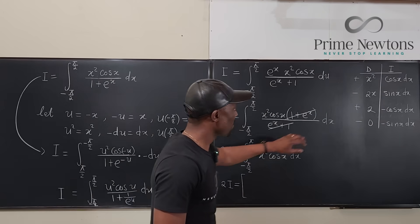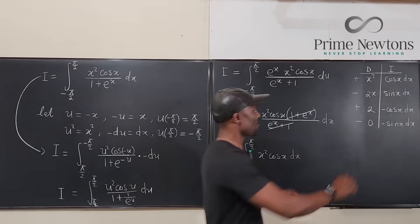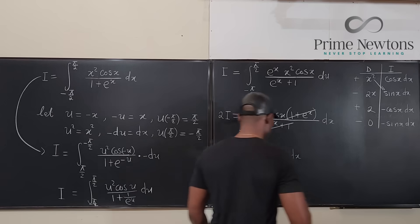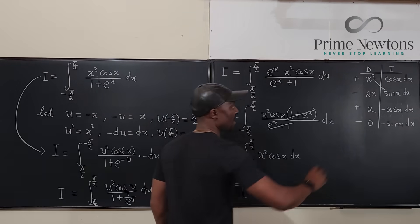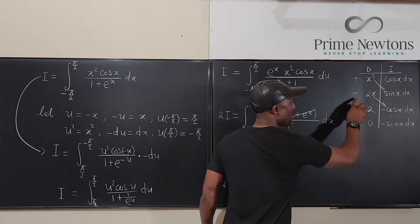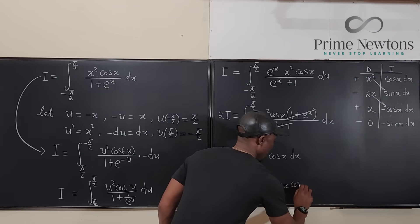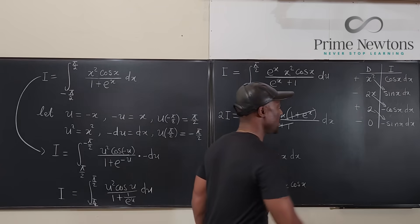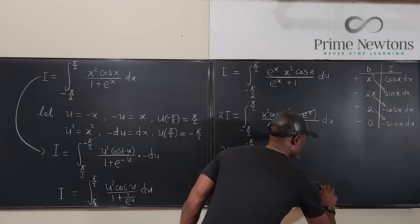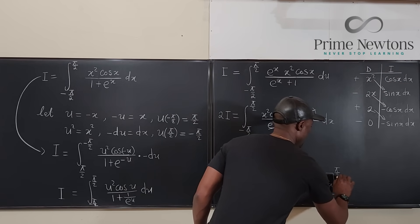So now what do we have? This integral can be written as x squared sine x. So we have x squared sine x. If you go this way, minus times minus is plus 2x cosine x. And then we can go this way. It would be minus 2 sine x. Minus 2 sine x. All evaluated from negative π/2 to π/2.